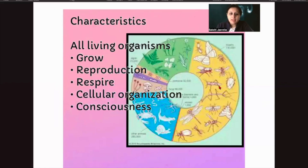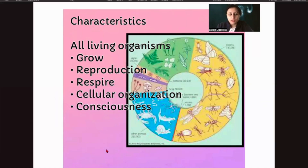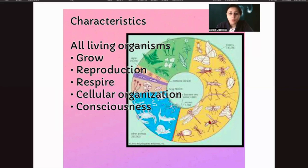Now, characteristics of all living organisms — these are the characters which distinguish a living organism from a non-living one. These characteristics are seen in all living organisms, whether it's a microorganism, a plant, an herb, a shrub, a tree, a climber, an insect, a reptile, or a mammal.